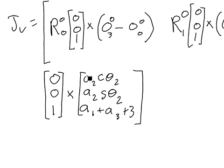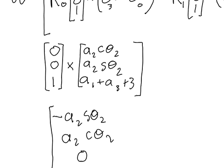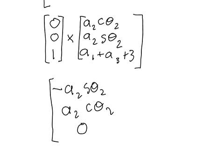You may notice I ignored the origin of frame 1 relative to frame 1 — that's because the origin of frame 0 relative to frame 0 is zero, so I left that off. If you don't remember how to do a cross product, you can look it up on Wikipedia, use your favorite linear algebra textbook, or ask me. After you take the cross product of the two vectors, you get the result shown here, and that's the first column of the linear velocity part of the Jacobian.